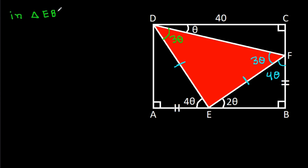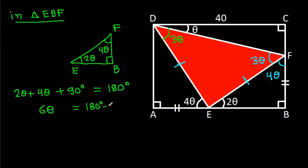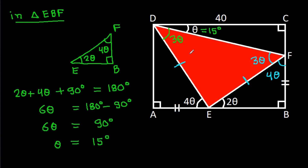In triangle EBF, angle EBF is 2 theta, angle BFE is 4 theta, and angle at B is 90 degrees. So 2 theta plus 4 theta plus 90 degrees equals 180 degrees, giving 6 theta equals 90 degrees, so theta equals 15 degrees. Therefore 3 theta equals 45 degrees.